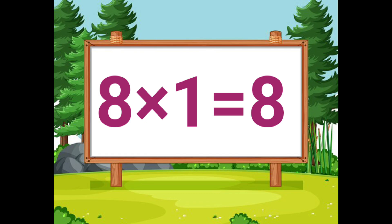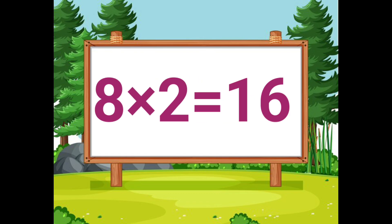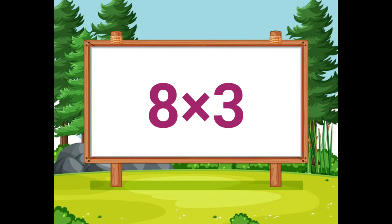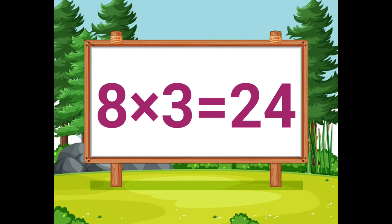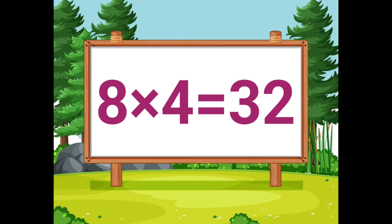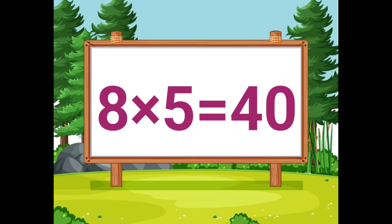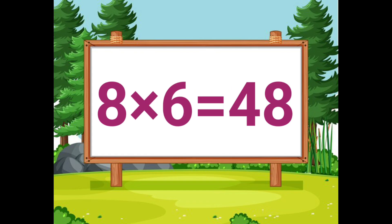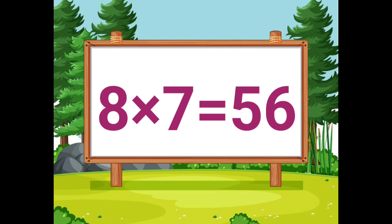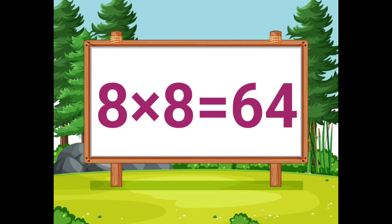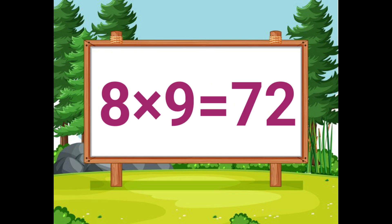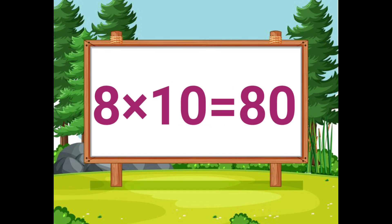8 ones are 8. 8 twos are 16. 8 threes are 24. 8 fours are 32. 8 fives are 40. 8 sixes are 48. 8 sevens are 56. 8 eights are 64. 8 nines are 72. 8 tens are 80.